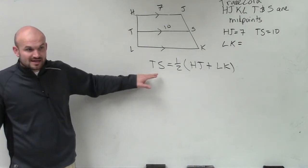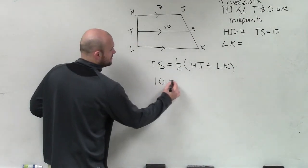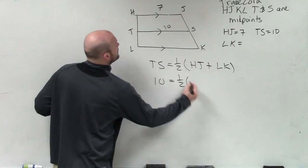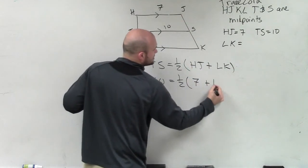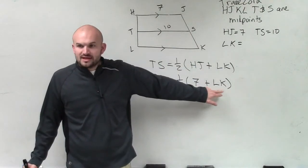But guess what? Now we know the length of our mid-segment, don't we? TS is now 10 equals 1 half. We know HJ, which is 7, plus LK. So now we're trying to solve for the length of LK.